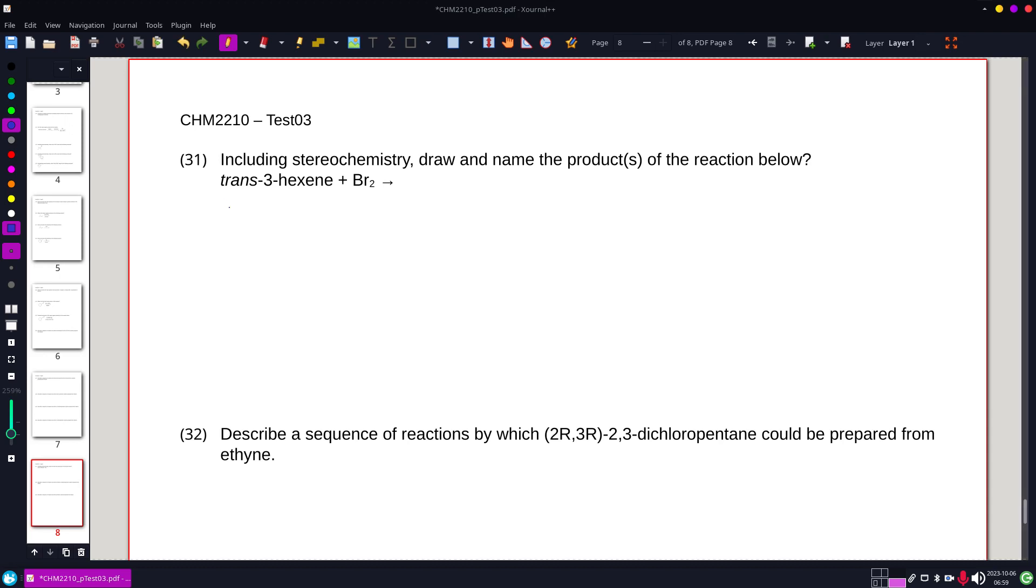So this time I'm gonna do this with perspective drawings. So I'm gonna start by drawing my trans-hexene. And my bromine's gonna be in with some methylene chloride probably. And for my perspective drawing, what I'm gonna do is draw the bromine's flat on the paper.